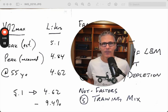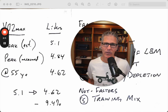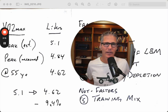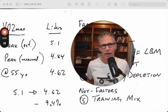If we take the 5.1 and go down to 4.62, that's a change of about 9% to 10%. So that's a 10% decline from my peak to 55 years old.